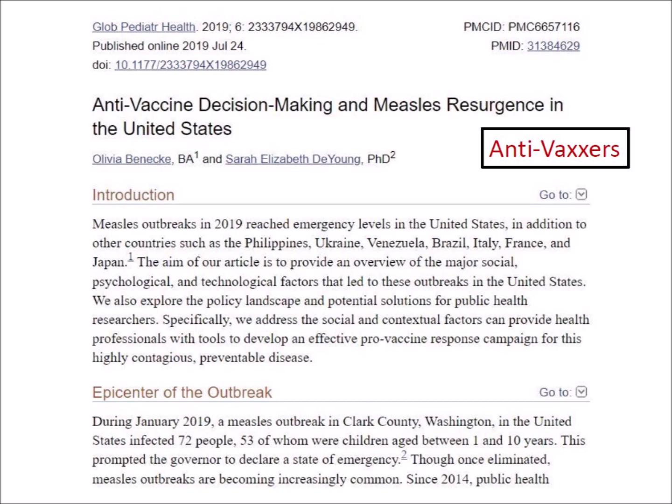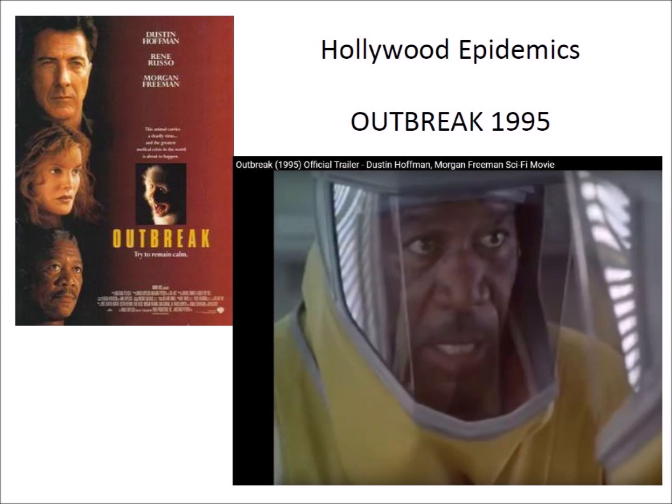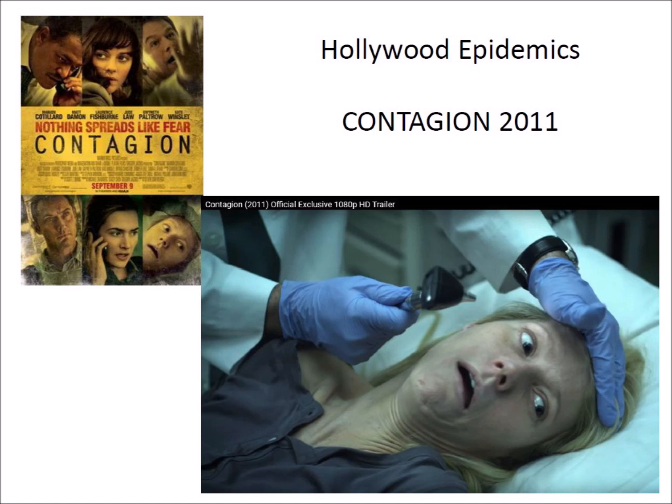Hollywood has dramatized fictional epidemics in films such as Outbreak in 1995, which describes the outbreak of a virus from a monkey in a military research institute and speculates how far military and civilian agencies might go to contain the spread of a deadly contagious disease. Contagion is a 2011 thriller film describing the spread of a virus transmitted by touching objects handled by infected individuals, showing medical researchers trying to identify and contain the disease, the loss of social order, and the introduction of a vaccine to halt its spread.